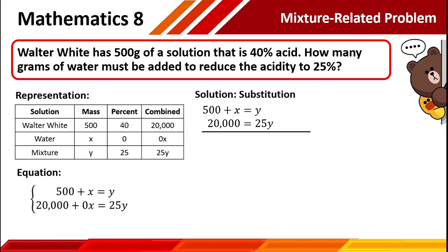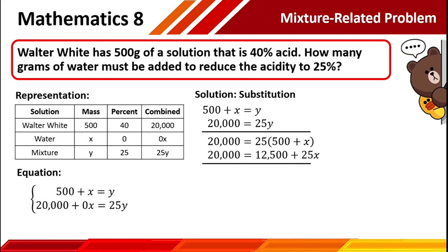A student asks: where is 0x? Always remember, class, any value of x multiplied by 0 will become 0, so there is no need to write it when computing. Using the substitution method, we can replace y by 500 plus x, so our new equation is 20,000 equals 25 times the quantity of 500 plus x. Using the distributive property, we distribute 25 to the factors inside the parentheses. Therefore, we have 20,000 equals 12,500 plus 25x. Using the addition property of equality, we subtract 12,500 from both sides, giving us 7,500 equals 25x. Dividing both sides by 25, the value of x is 300.